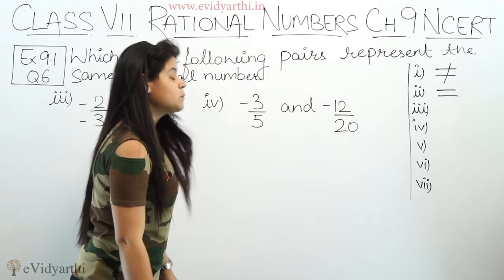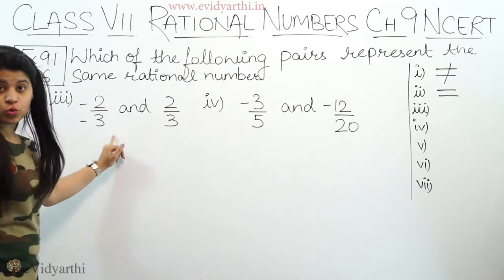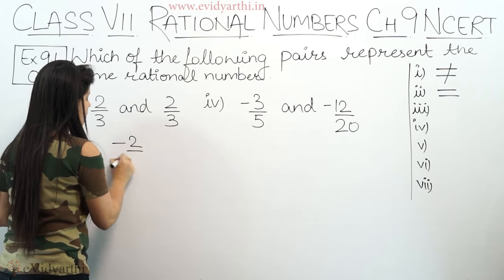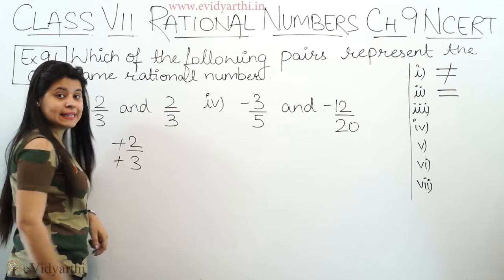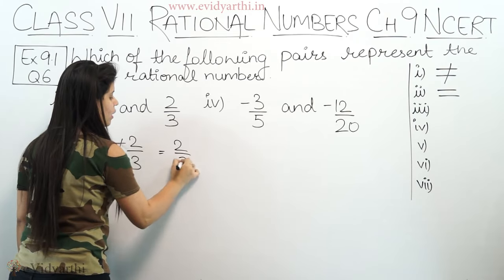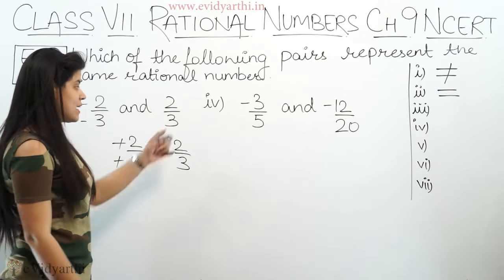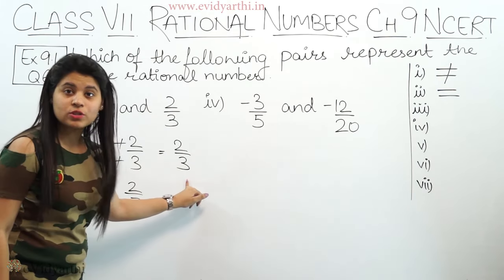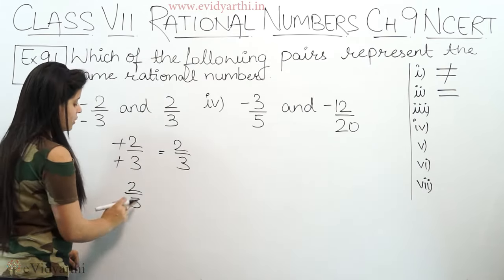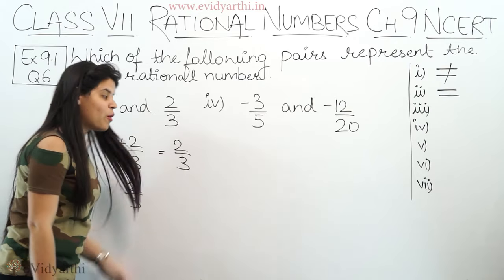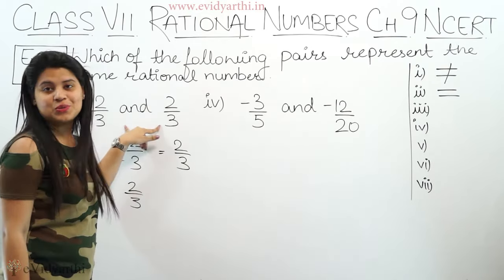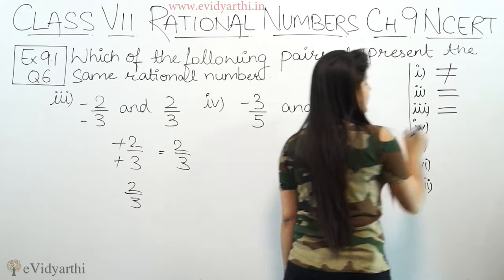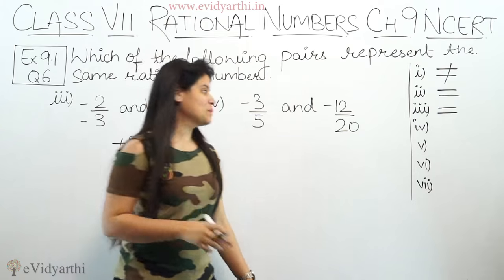Coming to the third part, we have minus 2 upon minus 3. If minus 2 upon minus 3, minus and minus cancel, this is 2 upon 3. And the second one is 2 upon 3. You can clearly see this is also 2 upon 3 and this is also 2 upon 3, so these two are equal. Third part, they are the same rational numbers.